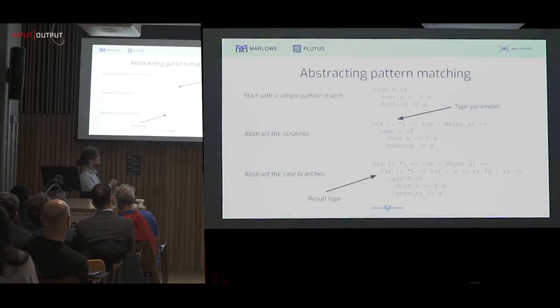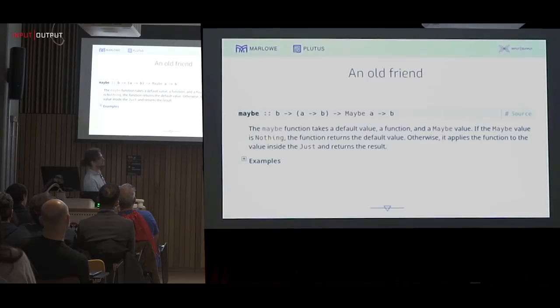Now we have some polymorphic function that takes some maybe a. Take the next step, pull out these implementations of the case branches, this f and g. F's got to take a thing of the type that's inside and give you some result type. G's got to just be of that type. And they've got to be the same because your case expression needs to have a single type, which is R in this case. And again, we want to be polymorphic over that. And at this point, this looks very familiar. This is maybe from the Haskell Prelude.